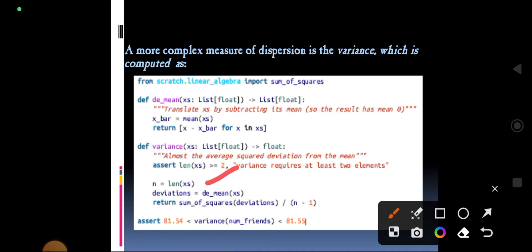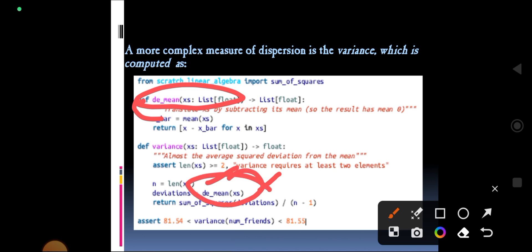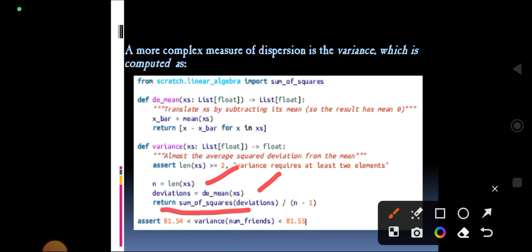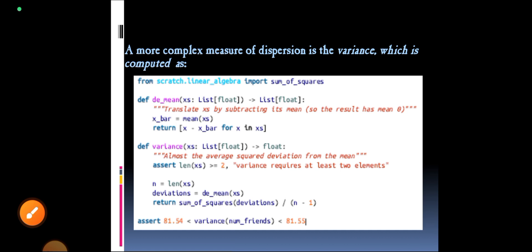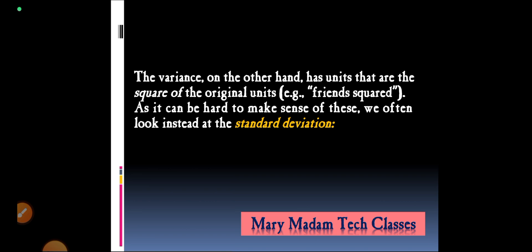n is set to the length of x's. deviations is set to d_mean of x's. Then we calculate the sum of squares of deviations divided by n minus 1. This is the variance formula, and the output will be between 8.54 and 8.55.